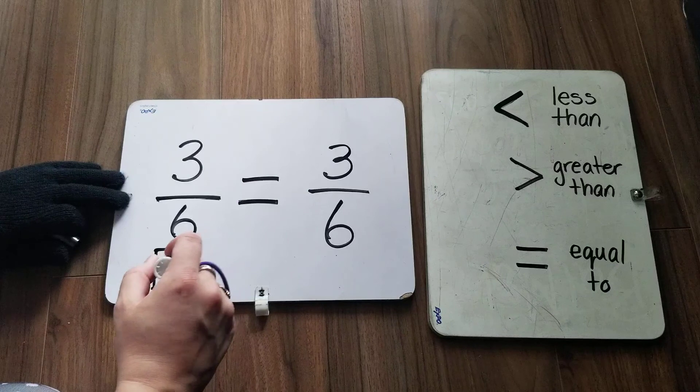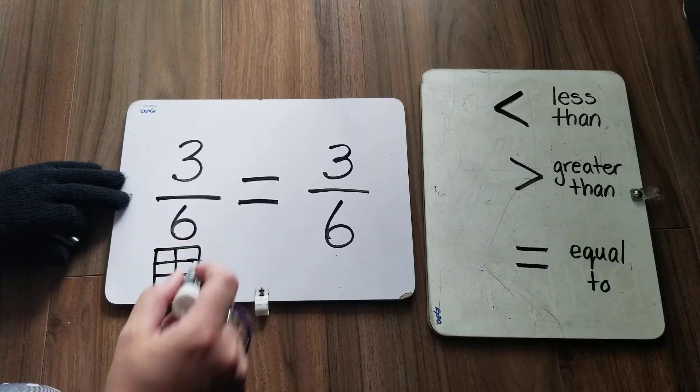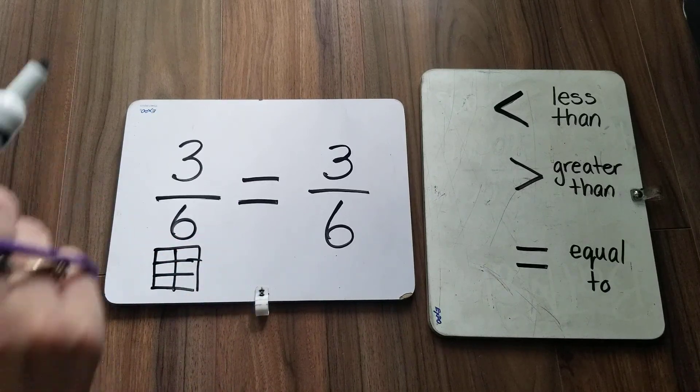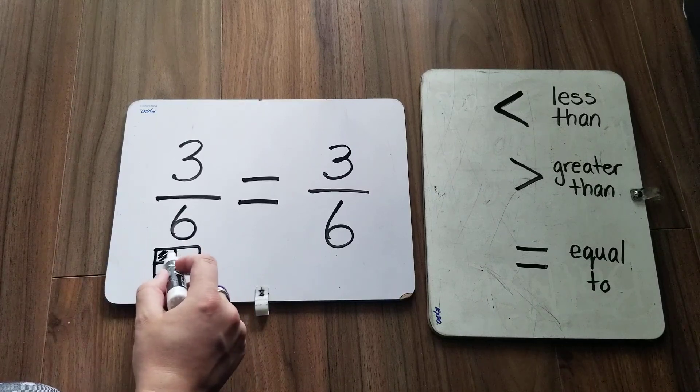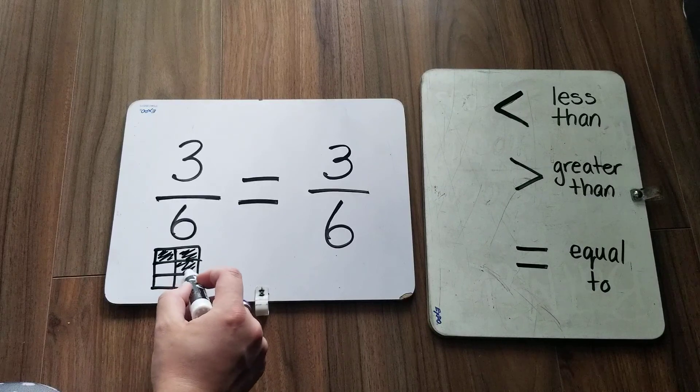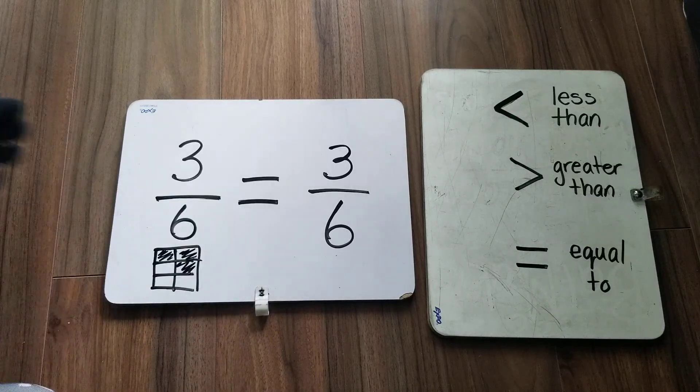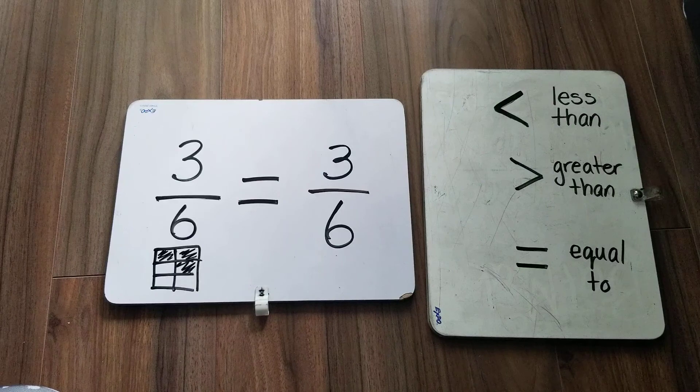And when you're drawing a fraction, the pieces all have to be the same size. Otherwise, that's not a fraction. Fractions have equal pieces. So one, two, three. My other drawing would look the same, if you need to draw them to help. Your turn now.